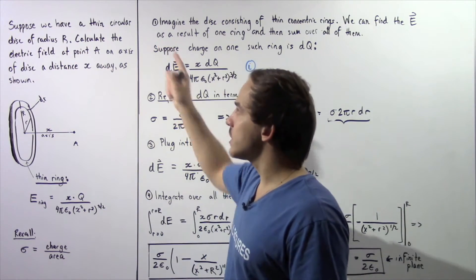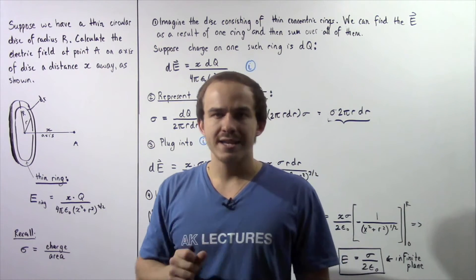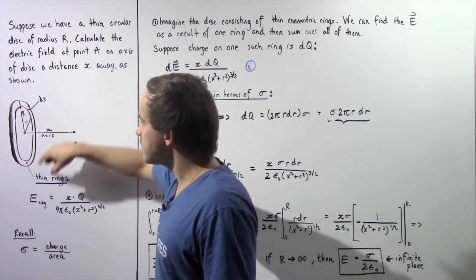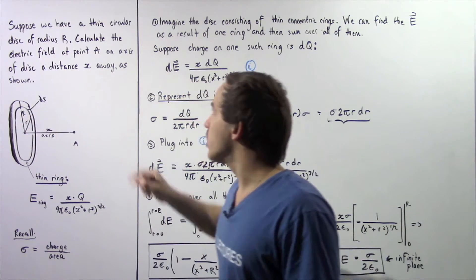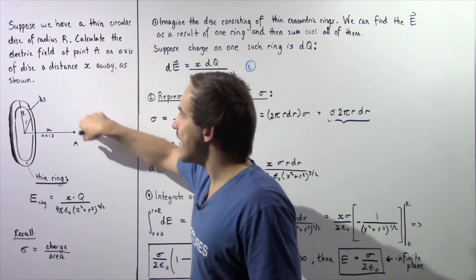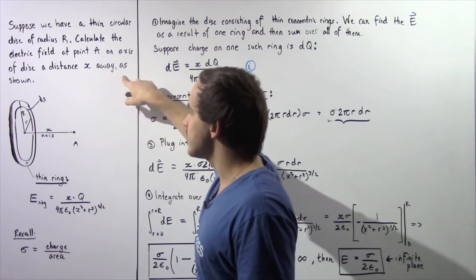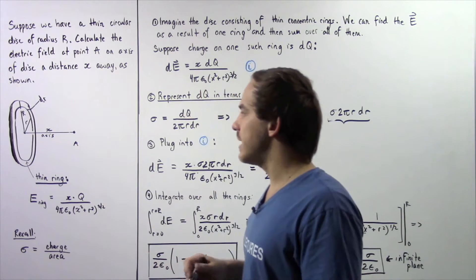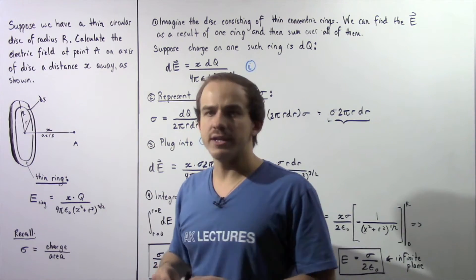So let's begin. Suppose we have a thin circular disk of radius uppercase R. So this is our disk and this is our radius R. Calculate the electric field at point A on the axis of the disk, a distance x away from the center of that disk as shown in the following diagram.